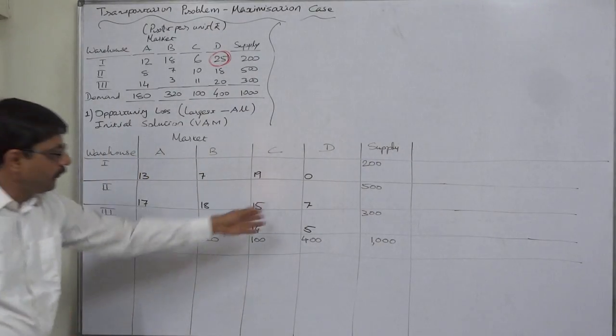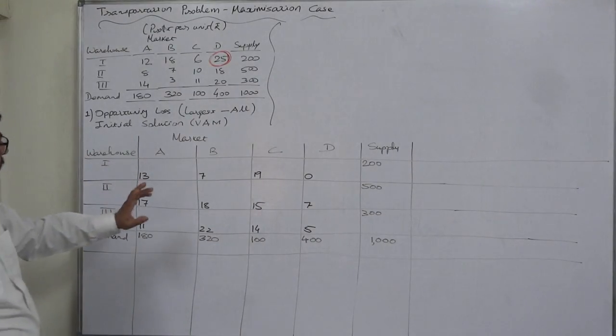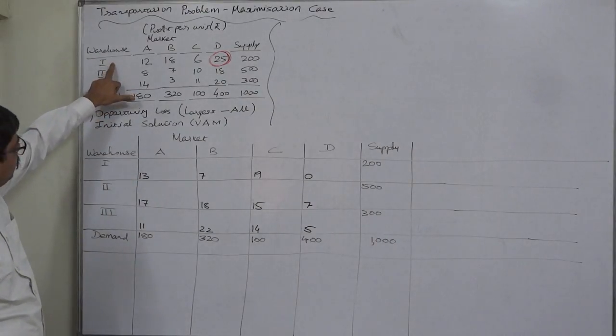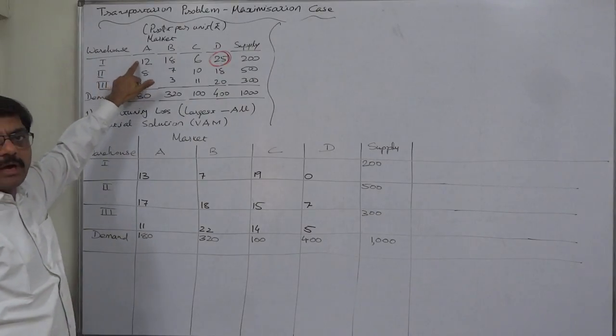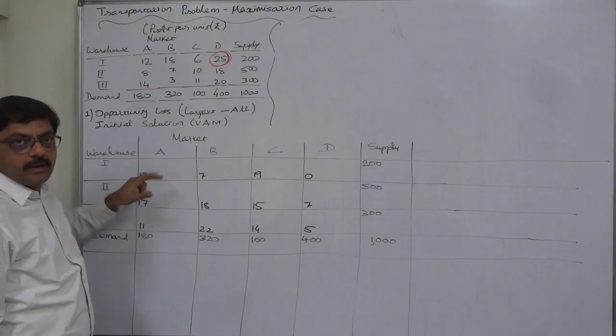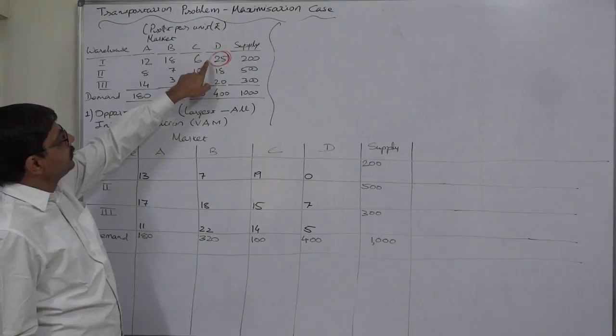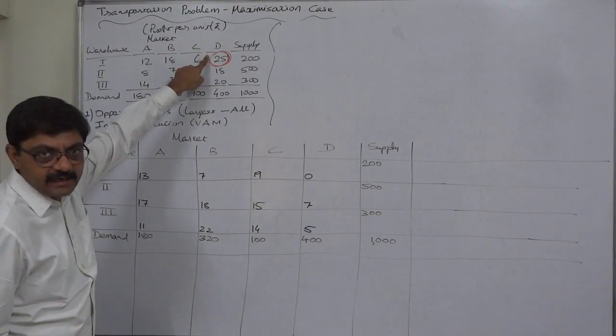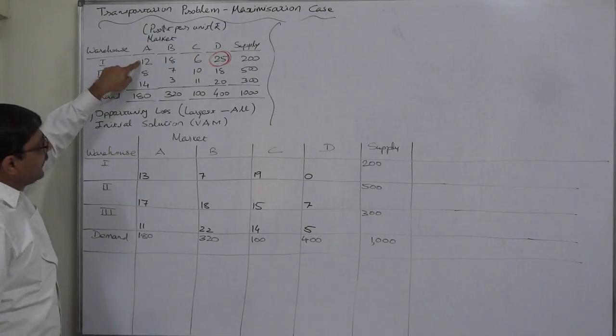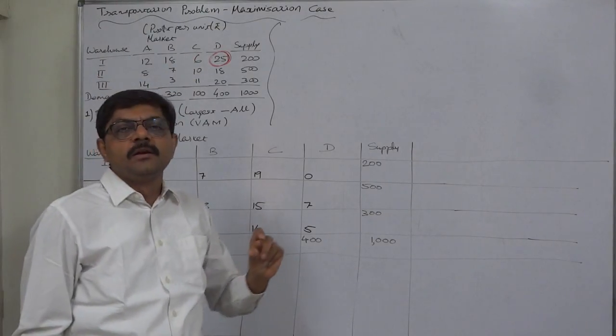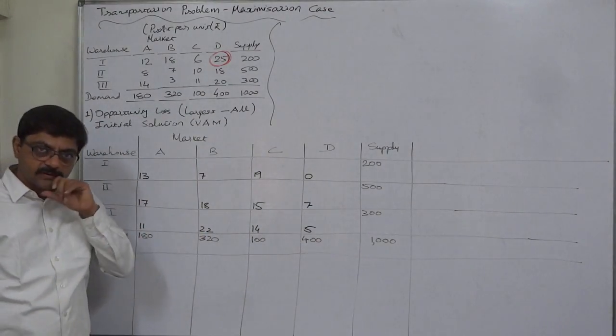What is the interpretation of all these values or opportunity losses? If we transport one unit from warehouse 1 to market A, we shall have a loss of rupees 13 in our profit. Because if we transport one unit to D, the profit is 25. Instead, we transport it to A, we will lose 13 rupees from our profit. This is the simple interpretation of opportunity loss.